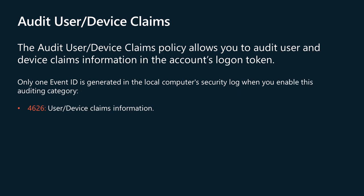The Audit User/Device Claims policy allows you to audit user and device claims information in the account's logon token. Events in this subcategory are generated on the computer on which a logon session is created. For an interactive logon, the security audit event is generated on the computer that the user logged on to. For a network logon, such as accessing a shared folder on the network, the security audit event is generated on the computer hosting the resource. Only one event ID is generated in the local computer security log when you enable this auditing category.